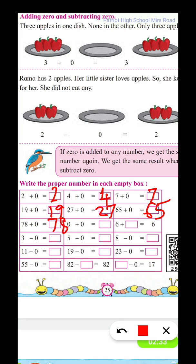Zero plus zero gives zero. Six plus zero gives six. Three minus zero is equal to three, because we are not removing any number. Five minus zero gives five. Eight minus zero gives eight.